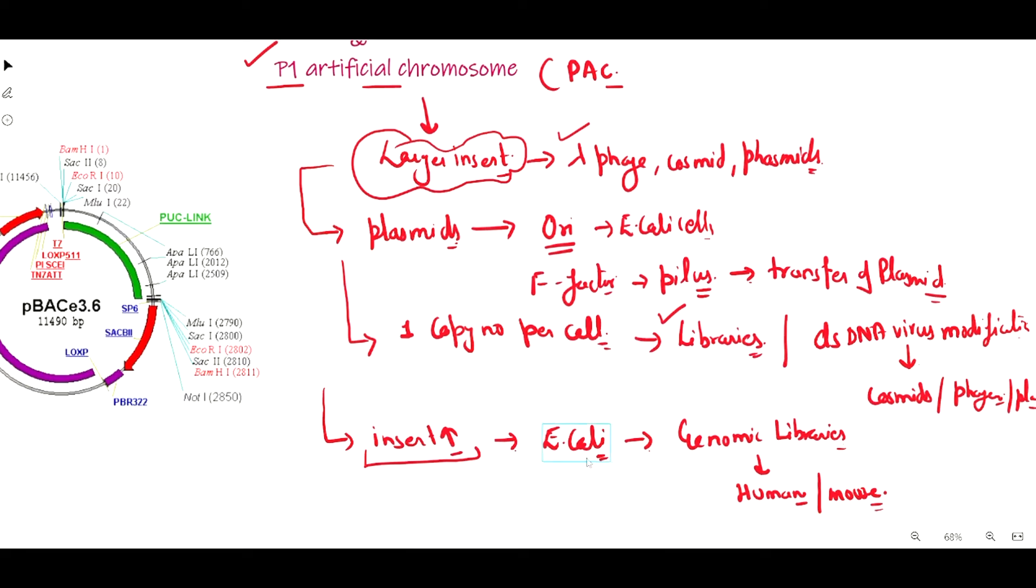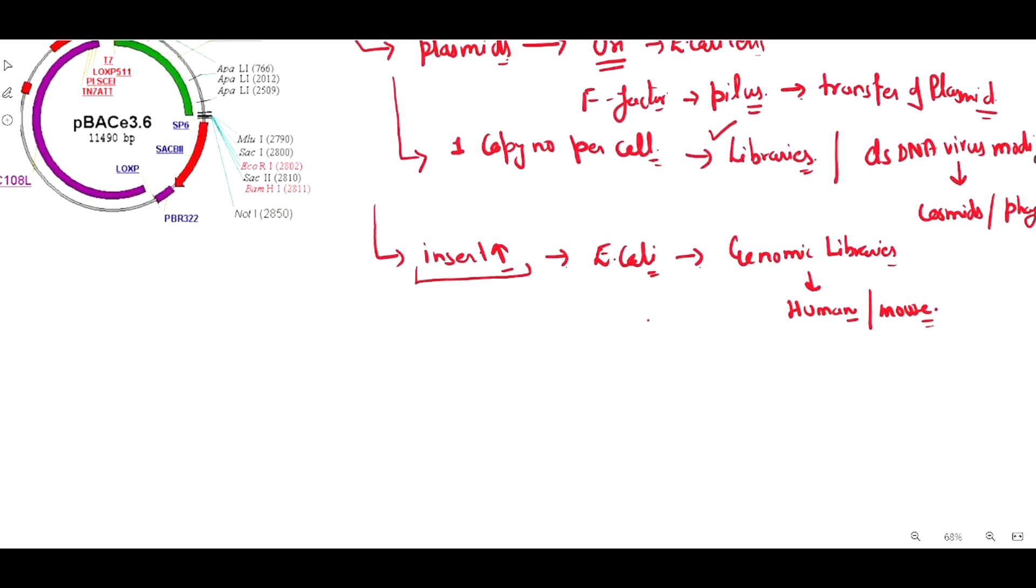Now let's talk about its structure. The vector consists of two parts. One part is P1, which is a temperate bacteriophage that infects bacterial cells. The property it has is that it contains an abnormal lysogenic infection cycle.